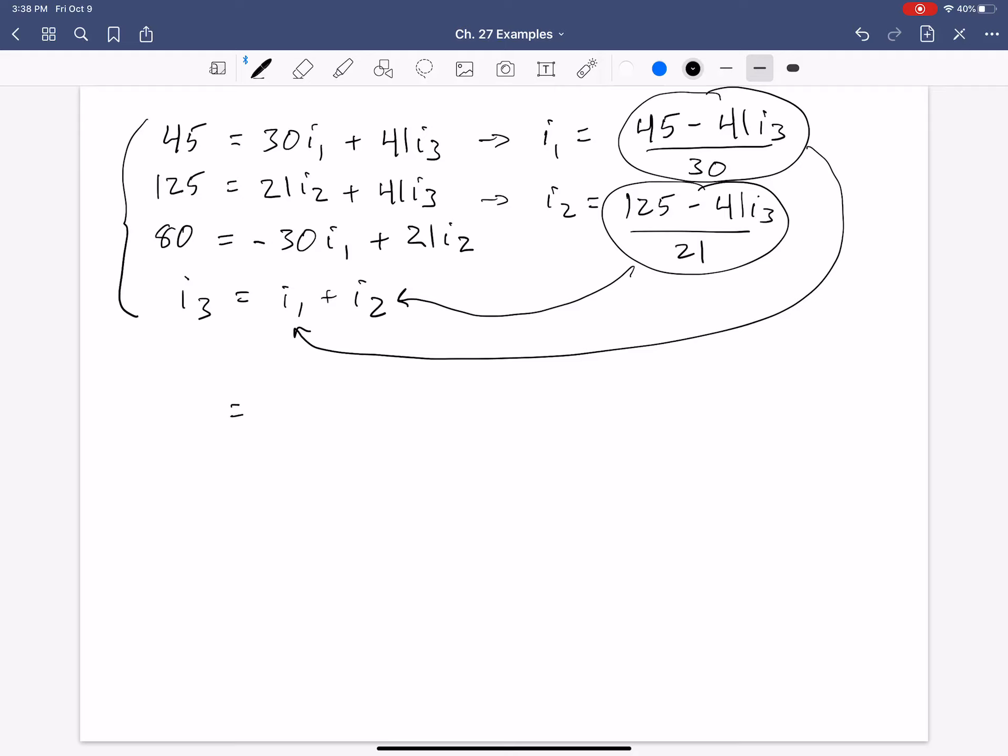See what we get. So, we have 45 over 30 minus 41 over 30 times I3 plus 125 over 21 minus 41 over 21 times I3. Now, this entire equation is in terms of I3. So, combine like terms. Let's put this in fractional form. I guess I should. So, 45 over 30, that's 1.5. And then minus 41 over 30. I don't have these numbers written out. I apologize. So, 1.37.